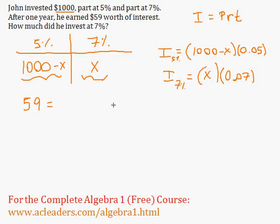So now we know that these two guys add up to 59. So 1,000 minus X times 0.05 plus X times 0.07, these guys will add up to 59. So once we solve for X, we're done.